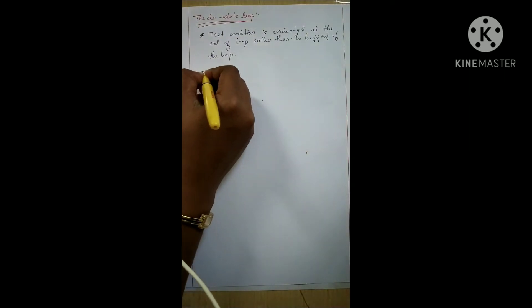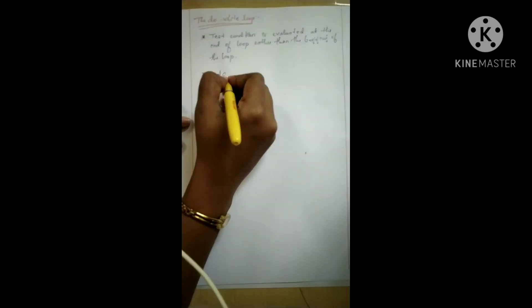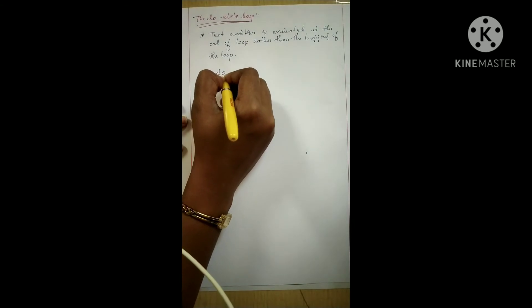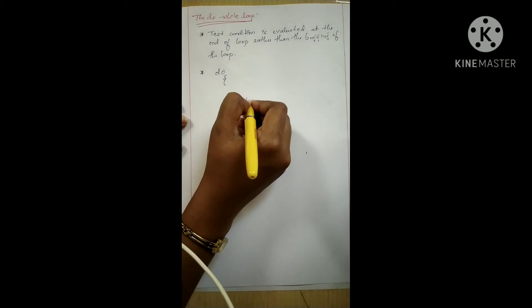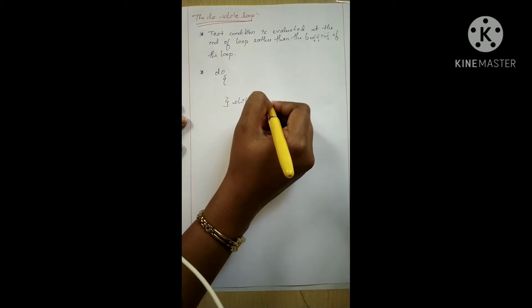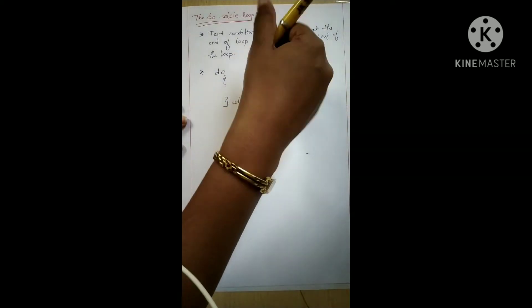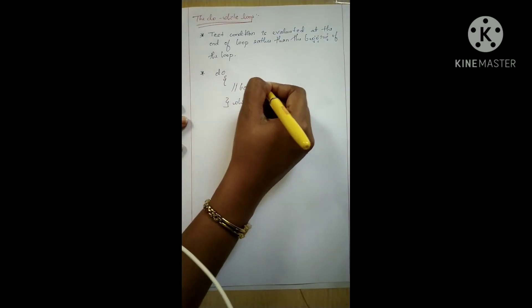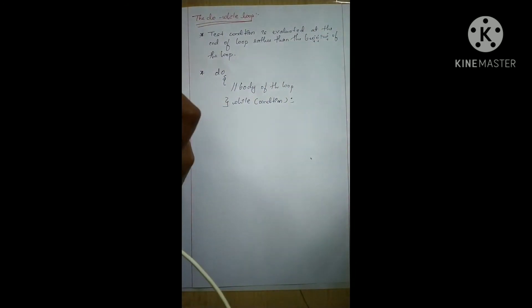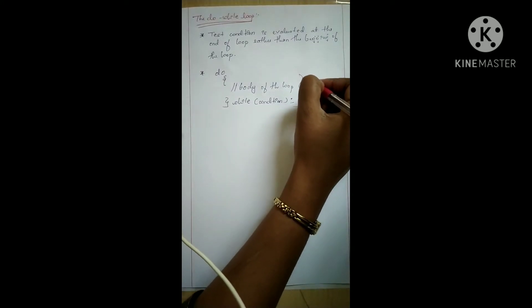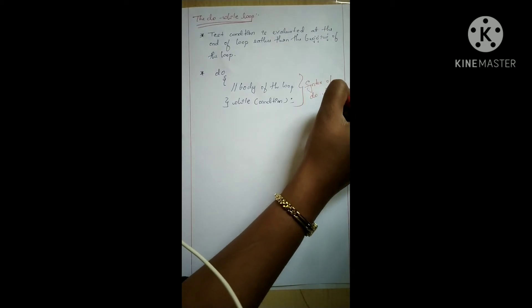Here we can see the do-while loop syntax: do { body of the loop } while (condition); The condition is checked at the end of the loop.